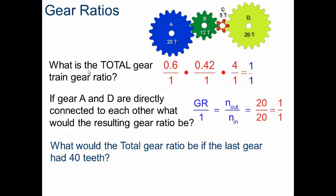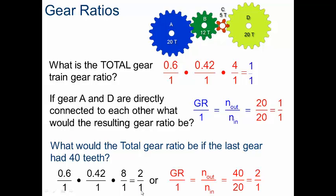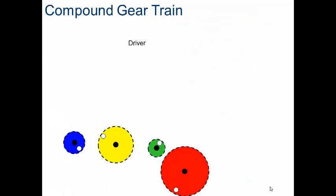But what would be the total gear ratio if the last gear had 40 teeth? We could still calculate each individual gear ratio. Notice what's changed now, that was my last set, my C to D would have an 8 to 1 ratio, giving my overall gear train a 2 to 1 ratio. That's going to be the same thing as if I simply compare my number of teeth out to my number of teeth in, or in other words, gear D to gear A, I'm still going to get that 2 to 1 ratio.